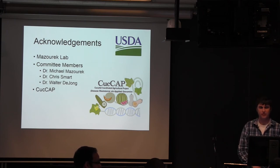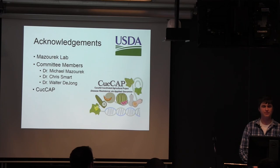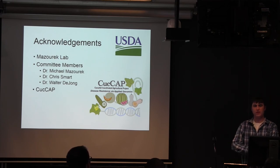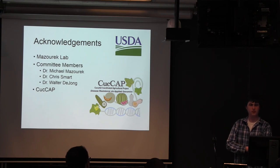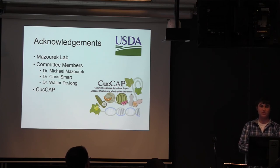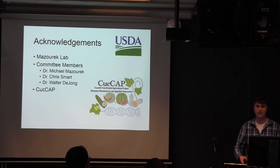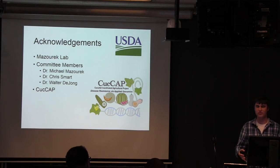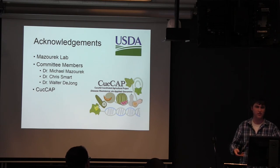Question: What territory does papaya ring spot virus cover — where is it endemic? It's present all throughout the United States. It can also affect papayas too — it infects papayas and cucurbits but not a whole lot else. It's not like CMV, which can infect like a thousand different things.